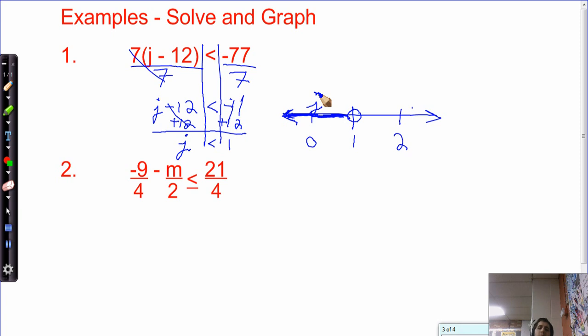Let's look at number two. Negative 9 fourths minus m over 2 is less than or equal to 21 fourths. Wow. I don't like this at all. But, I do know that I can cancel out denominators by multiplying by them.